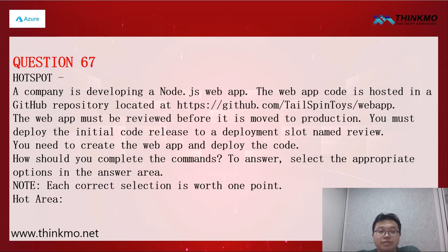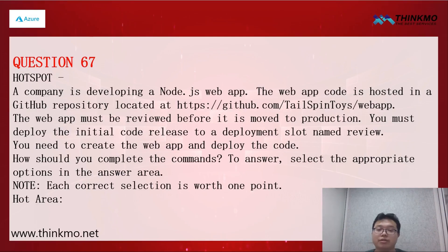Next is question 67. The background is that a certain company is developing a Node.js application. The web application code repository is on GitHub. Before the application goes into production, it needs to go through a review, and the initial code needs to be deployed to a deployment slot with a specific name. You need to create the web application and deploy the code.